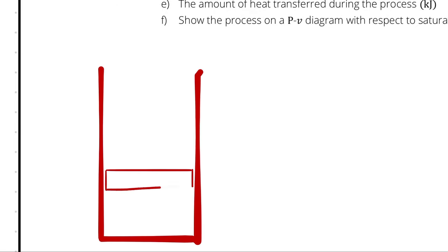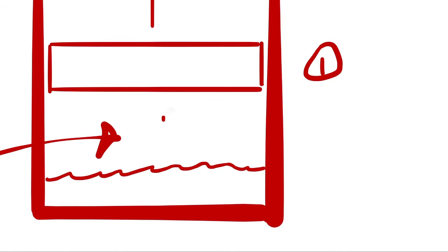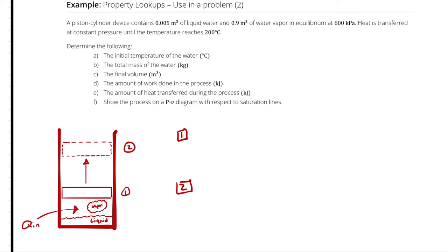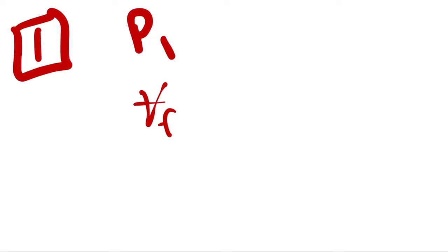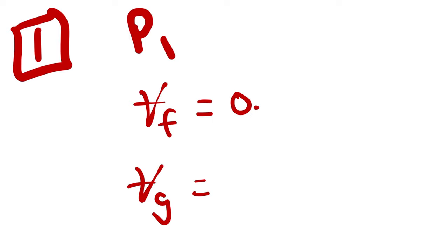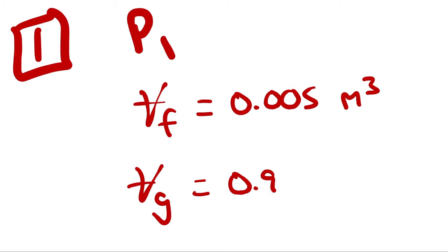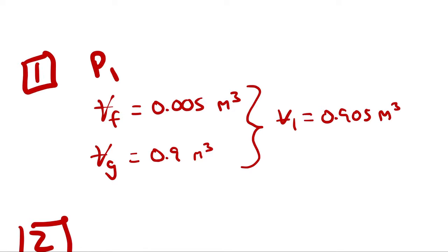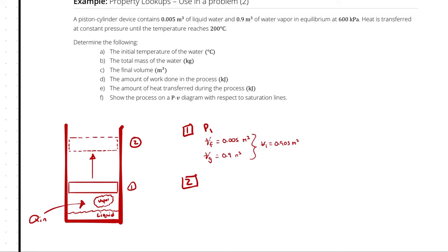I will begin with a diagram of our problem, then populate what I know about our beginning and end state points — state 1 and state 2. At state 1, I know a pressure and a volume. Because we have a combination of water vapor and liquid water coexisting, the only way they can coexist in equilibrium is at saturation conditions; otherwise we wouldn't meet phase equilibrium. So we have a volume of saturated liquid of 0.005 cubic meters and a volume of saturated vapor of 0.9 cubic meters, giving a total volume at state 1 of 0.905 cubic meters.